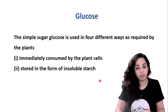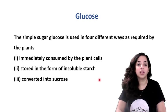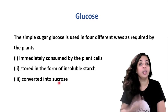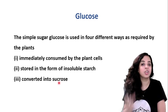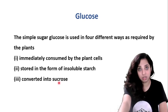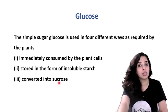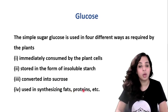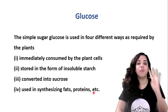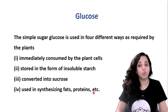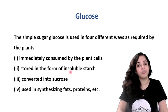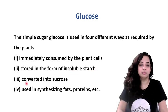Third, glucose is converted into sucrose — in fruits it gets converted into sucrose, which is why fruits taste sweet. Fourth, it is used in synthesizing fats, proteins, and so on. So those are the four uses of glucose: immediately consumed, stored as insoluble starch, converted into sucrose, and used in synthesizing fats and proteins.